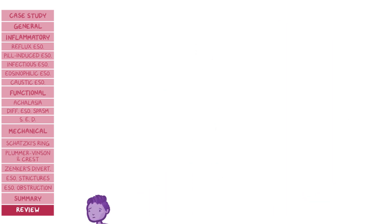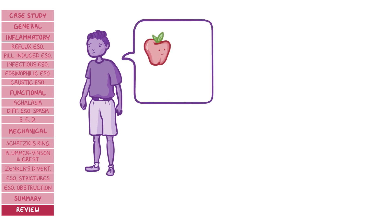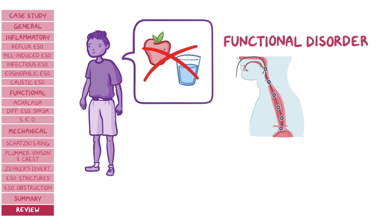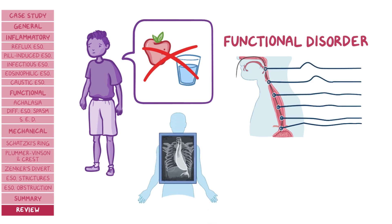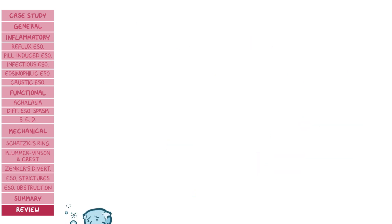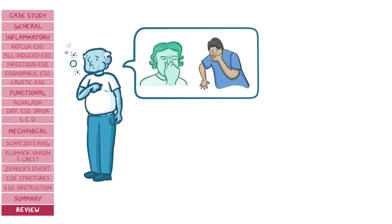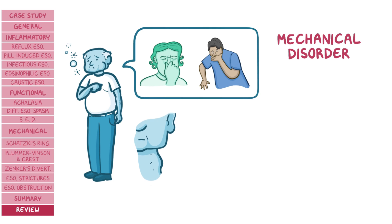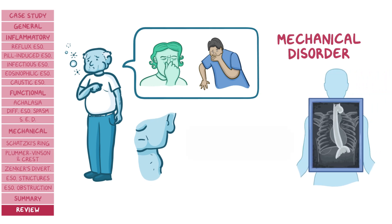Now back to our cases. Ravi came to the clinic because he experienced difficulty swallowing food and water over the last three months — dysphagia to solids and liquids — suggesting a functional esophageal disorder. Esophageal manometry showed incomplete lower esophageal sphincter relaxation, while barium swallow revealed a dilated esophagus with an area of distal stenosis. So this is a classic case of achalasia. Frank came to the clinic because of bad breath, regurgitation of food overnight, and trouble swallowing solids. Since his problem involves only solids, we can assume he has a mechanical esophageal disorder. The bad breath, food regurgitation, and mass on the side of his neck are the key clues, and a barium swallow confirmed the diagnosis of Zenker's diverticulum.